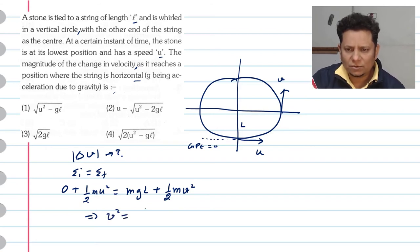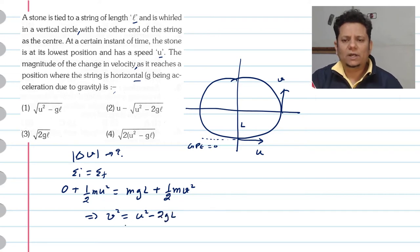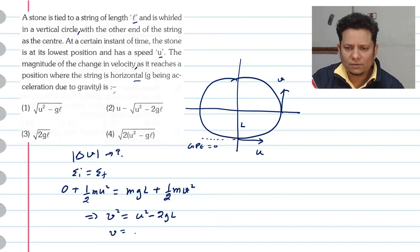We can say that V squared will be equal to U squared minus 2gL. Which gives V equals square root of U squared minus 2gL. Now, we have been asked for delta V.